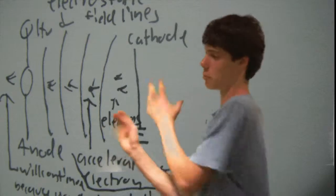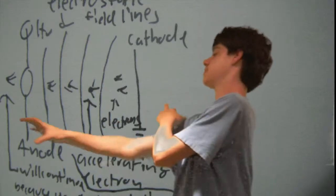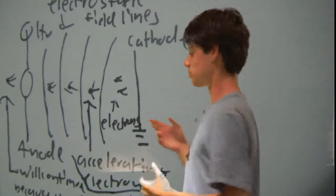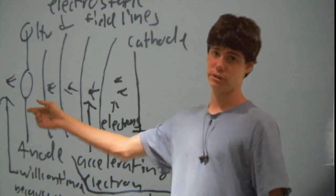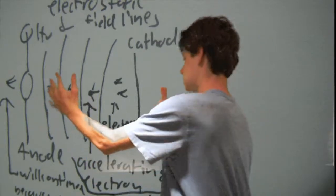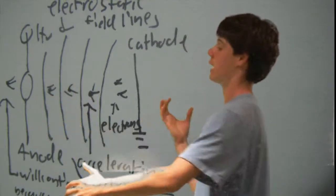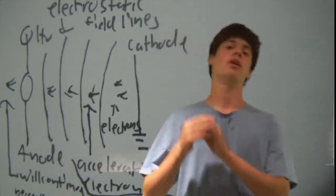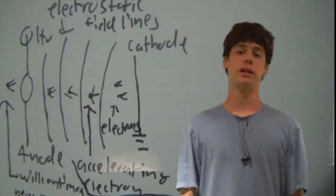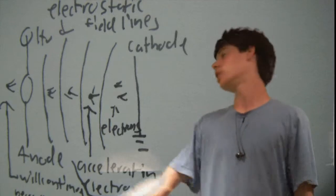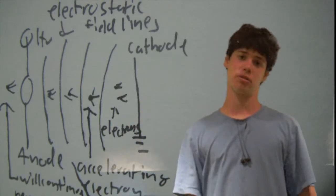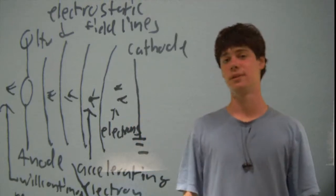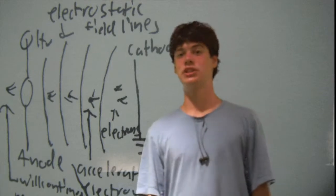To sum it all up: electrons aren't repelled by cathodes and attracted towards anodes — they are actually accelerated along the electrostatic field, which only exists between a cathode and anode. Once they leave that electrostatic field, they're done. They're not going to be sucked back to the anode. So that's why electrons aren't actually sucked back towards anodes. Thanks for watching.